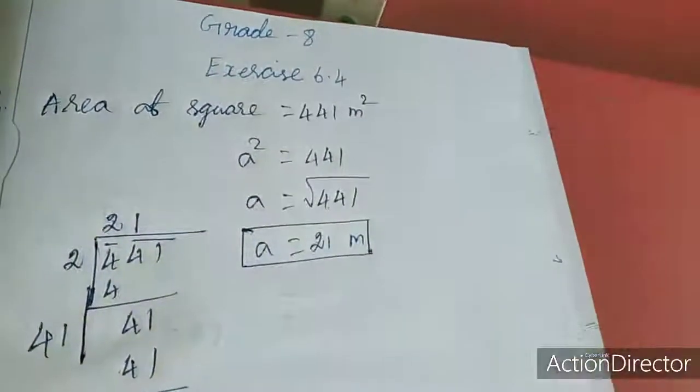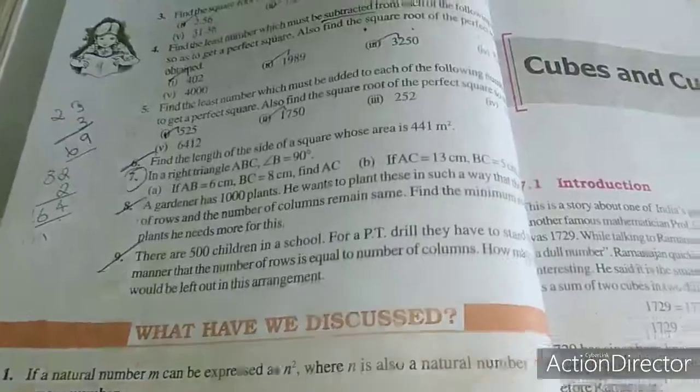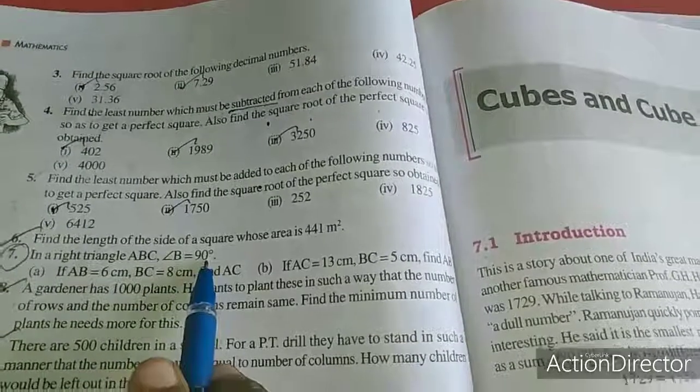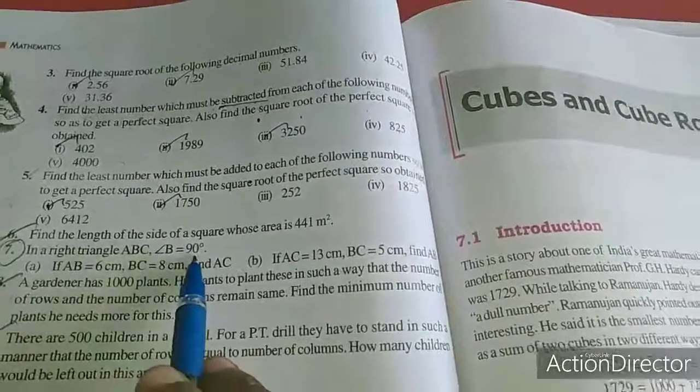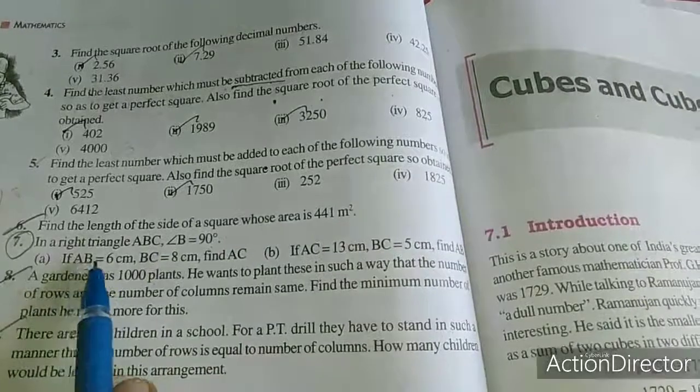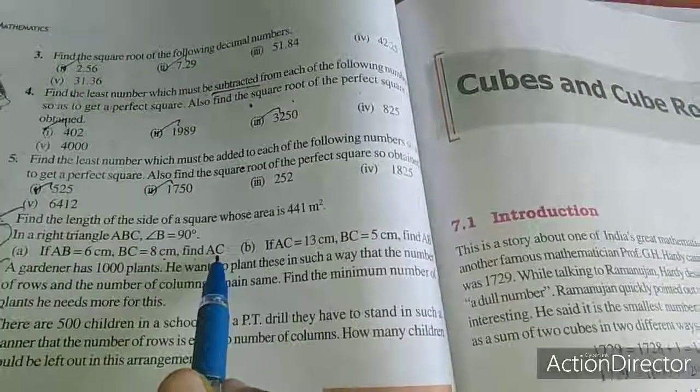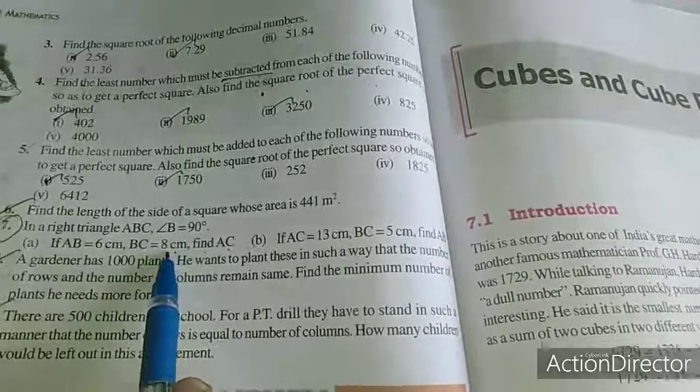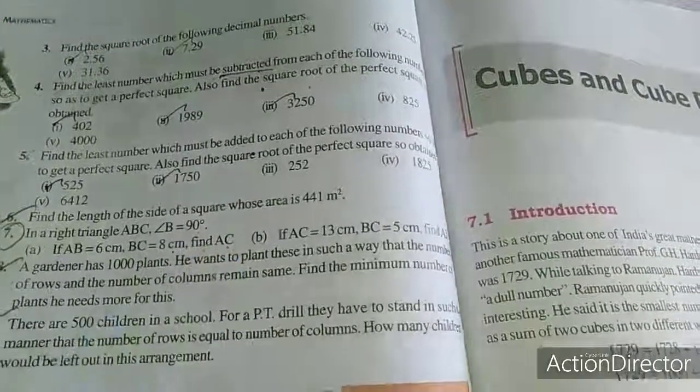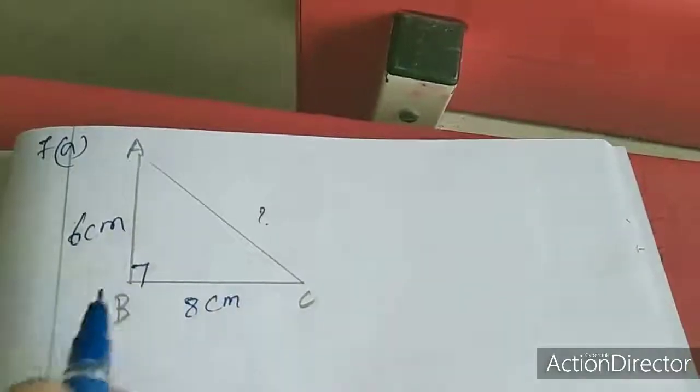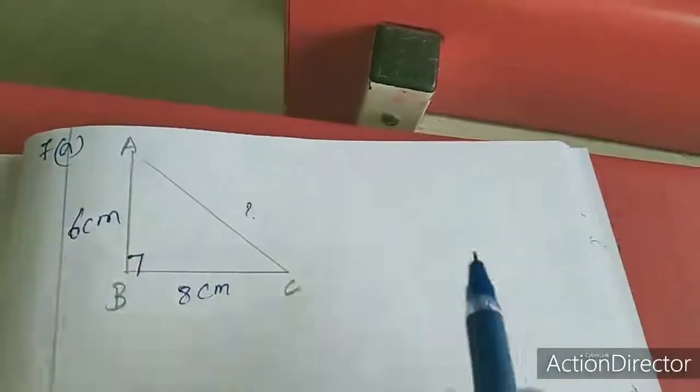Now we will move to the 7th sum. See here, in a right triangle ABC, B equal to 90 degree. Right angle triangle. AB equal to 6 cm, BC equal to 8 cm, find AC. They are telling B is 90 degree, so 90 degree I marked here, the values I marked.